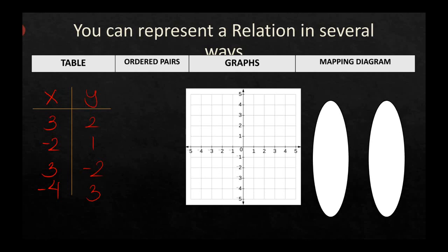In terms of ordered pairs, an ordered pair is a composition of the x-coordinate (abscissa) and the y-coordinate (ordinate). We pair these values in a fixed order — x then y — enclosed in parentheses. Transforming the table into ordered pairs, we get: (3, 2), (negative 2, 1), (3, negative 2), and (negative 4, 3).